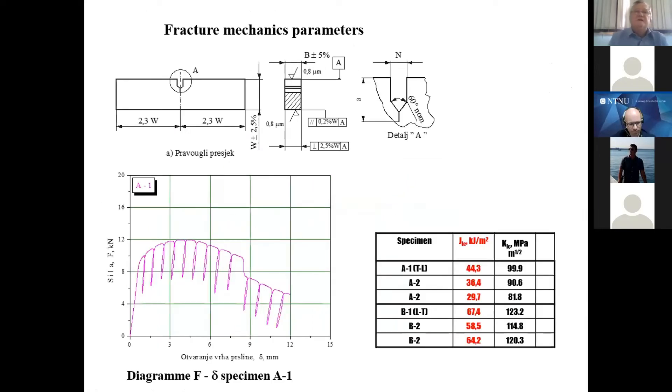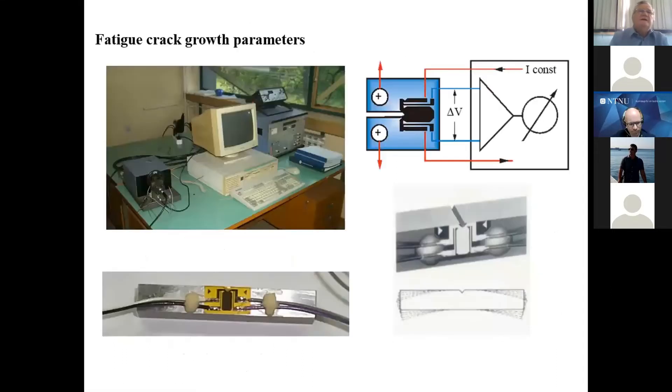But we are more interesting now in fracture mechanics parameters. In other words, K1C was measured via J1C. So according to ASTM E1820 standard, this was done. And results were classified in two directions. And then finally, fatigue crack growth.